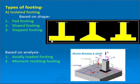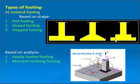The first diagram is for pad footing, in which the thickness of the footing is uniform. The second type is slope footing, also called trapezoidal footing, in which the depth is more near the face of the column and decreases towards the edges. In step footing, steps are provided where the depth is more near the column face and reduces towards the outer face.